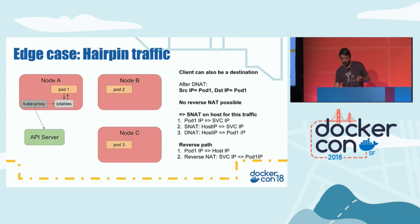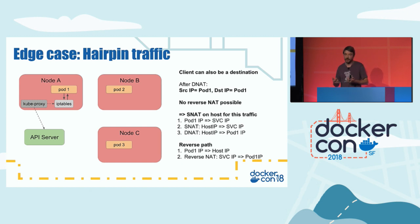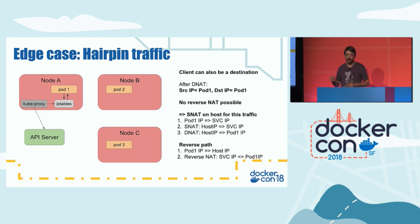There's an interesting edge case called hairpin traffic. If you're in a pod that's also part of the service and from that pod you try to access the service, one time out of three you'll be sent back to yourself. The destination gets changed to your own pod IP, so traffic arrives with source IP pod-one and destination IP pod-one — it never hits the reverse NAT and gets dropped. The solution: kube-proxy identifies hairpin traffic and marks it for source NAT, so traffic enters the pod with the host IP as source. It can then return to the host, be reverse-NATted, and go back correctly.